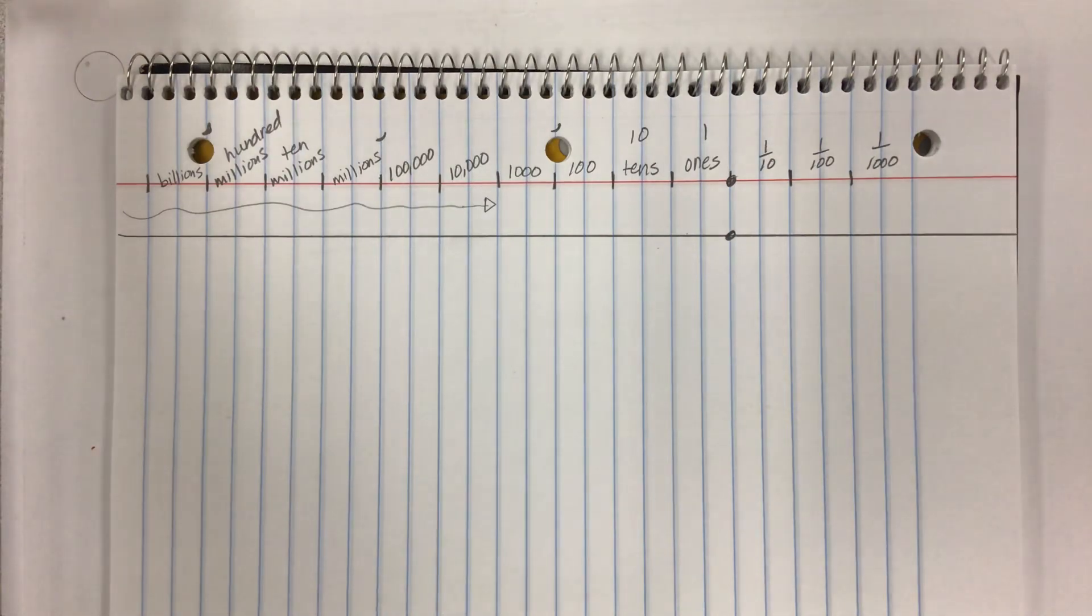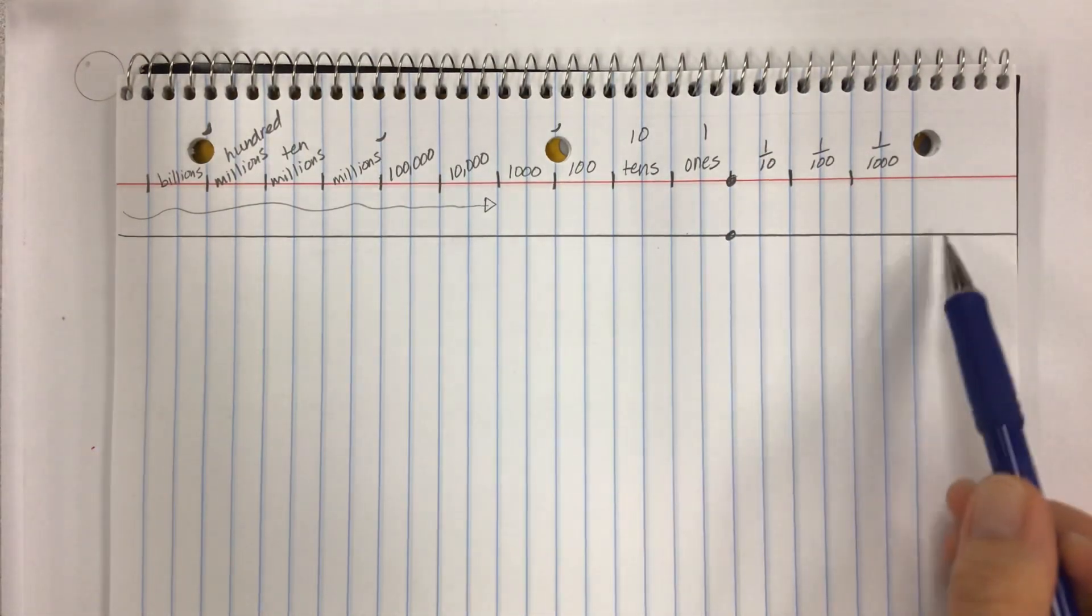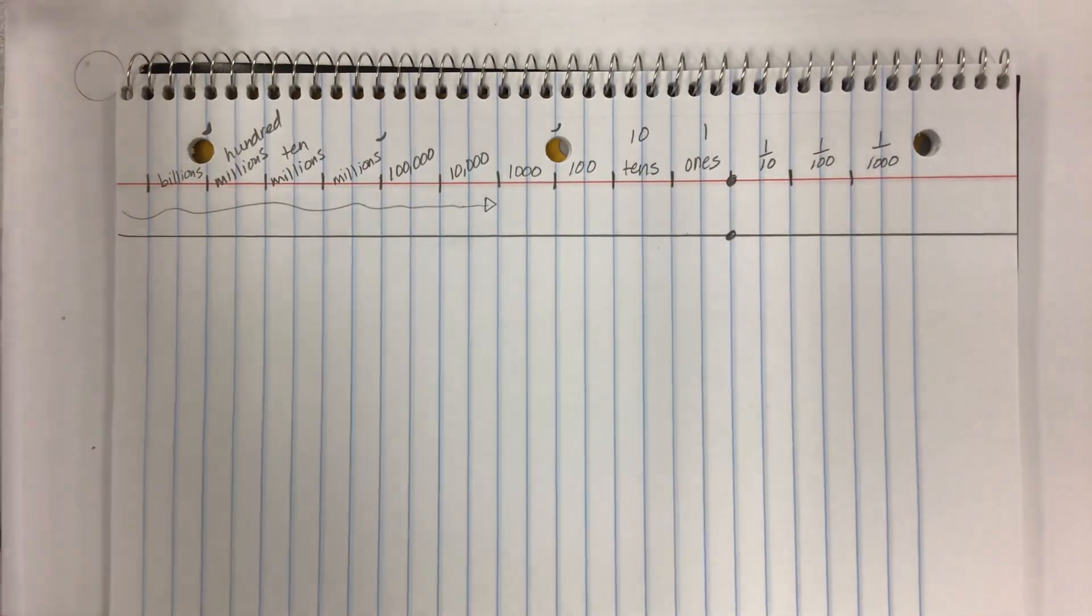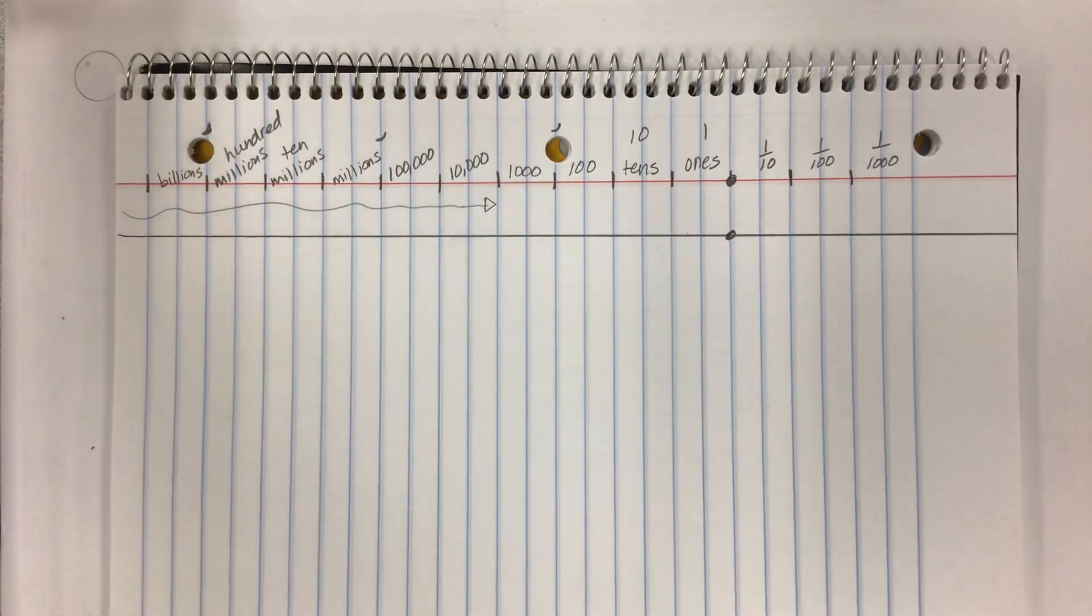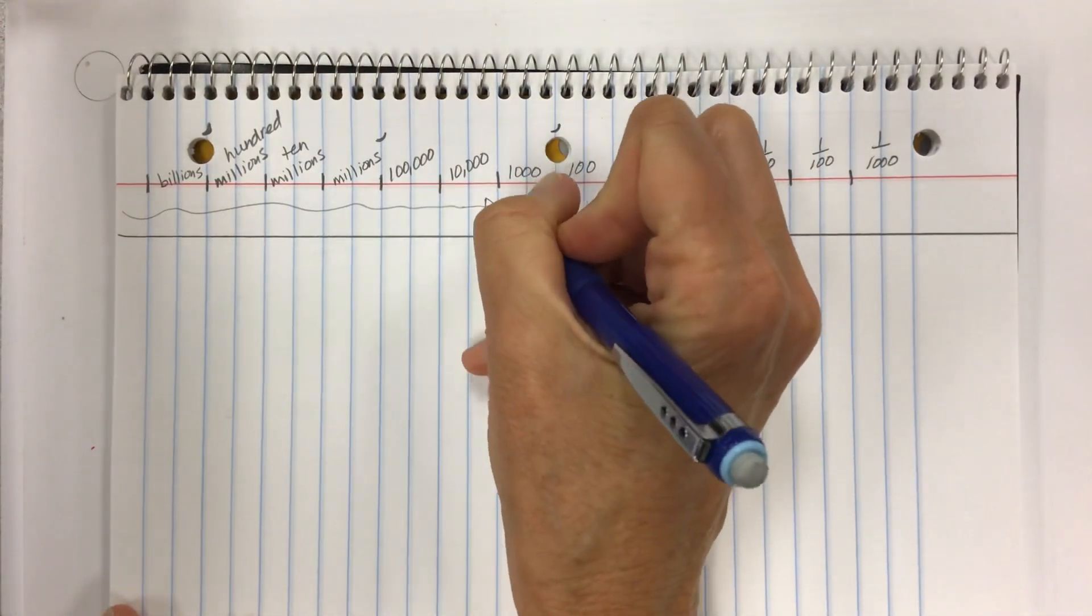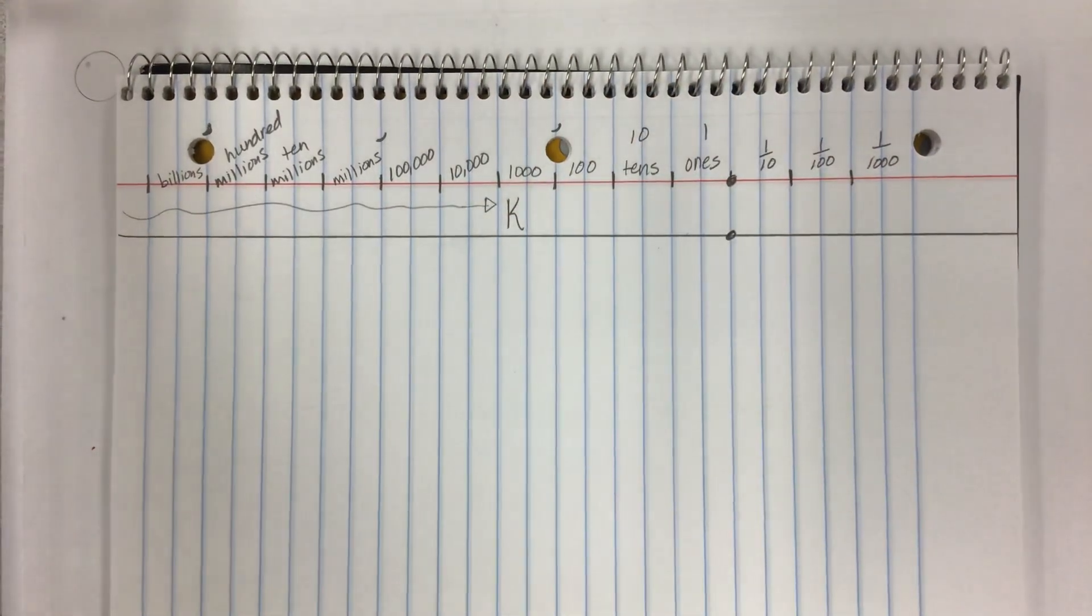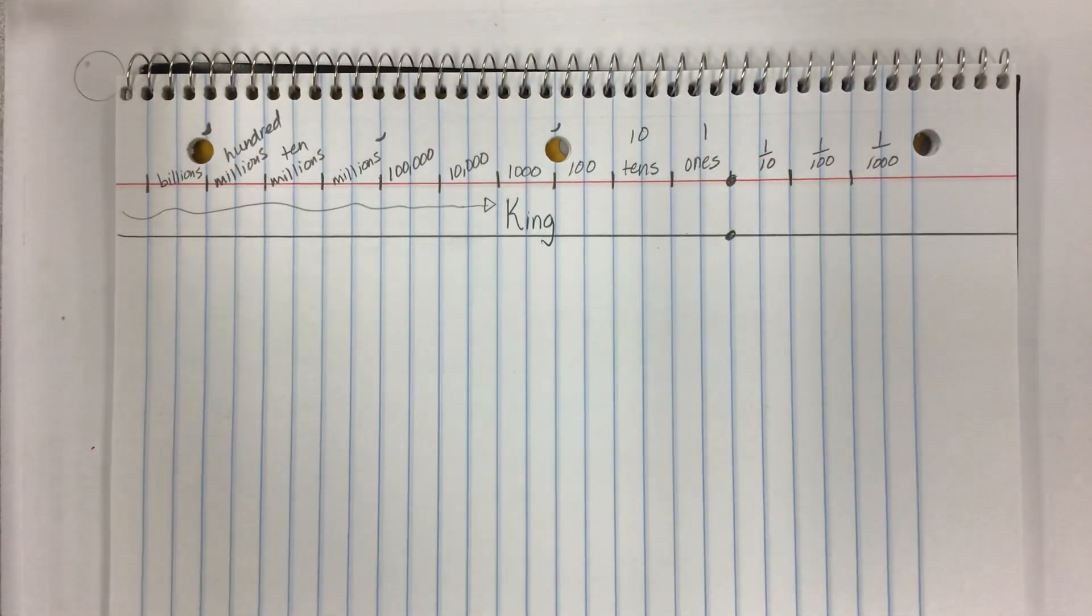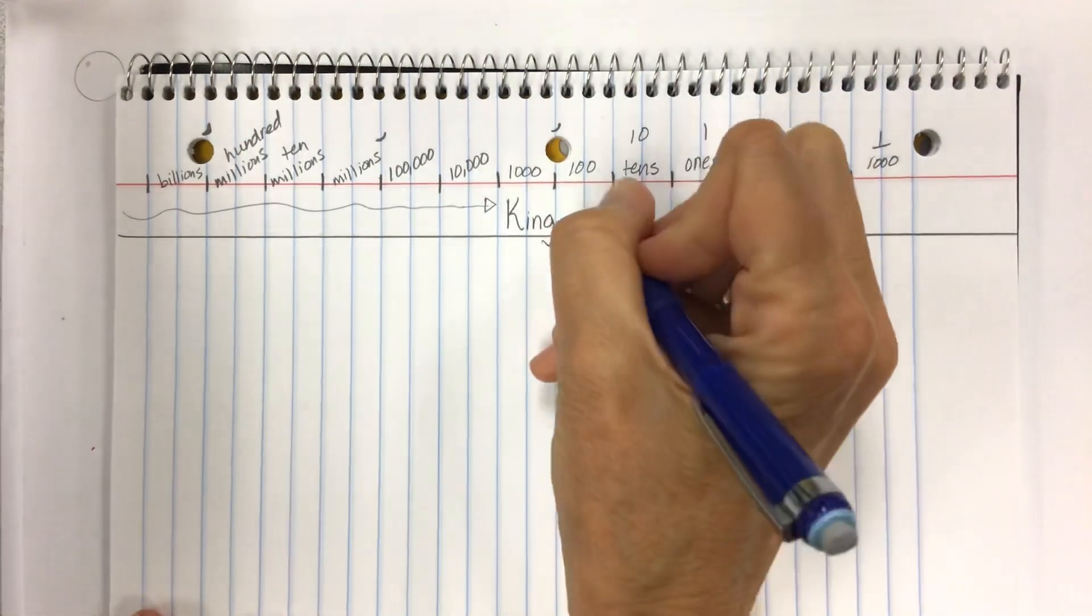Today I want to tell you a story to help you understand the metric system prefixes that are going to live right here on the number line. So here's the story: once upon a time there was a village and this village was in a land where they had a king who was just not very well liked. The king is an important figure in our story so we're going to write under the thousands, I want you to put a K to help you remember that this story is about a king.